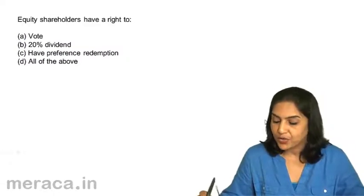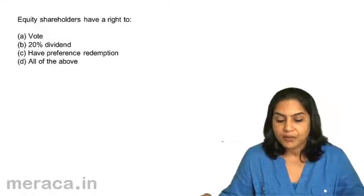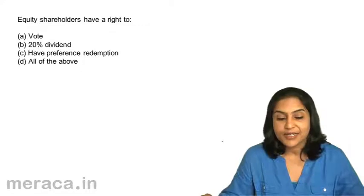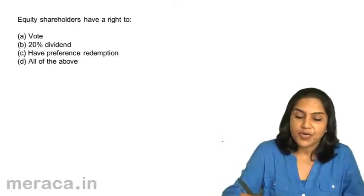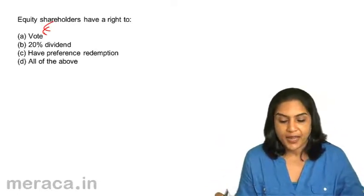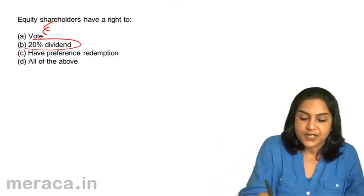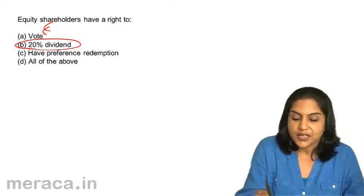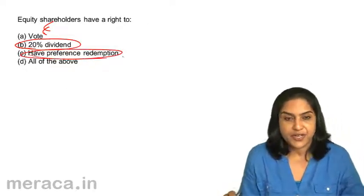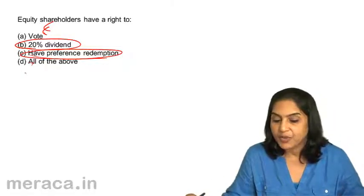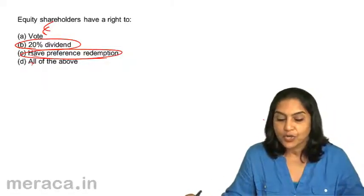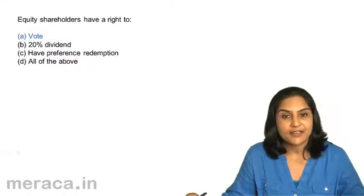Equity shareholders have a right to: A. Vote. B. 20% dividend. C. Have preference redemption. D. All of the above. Equity shareholders have a right to vote. There is no fixed dividend for equity shareholders. They do not have any preference redemption, and therefore B, C, or D would not be applicable. A — equity shareholders have a right to vote — would be the correct answer.